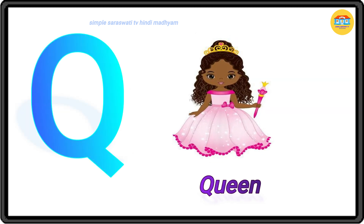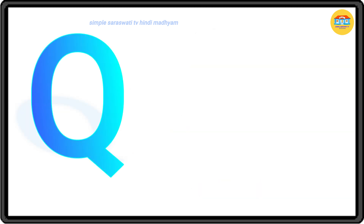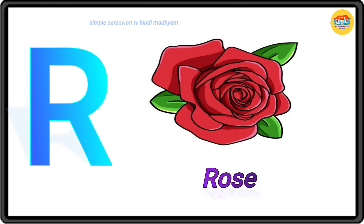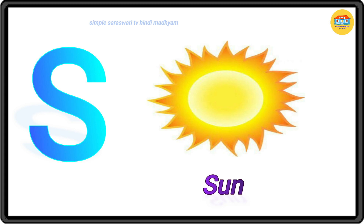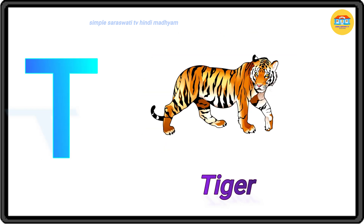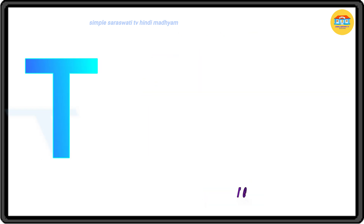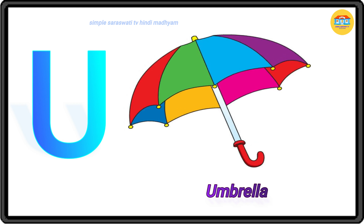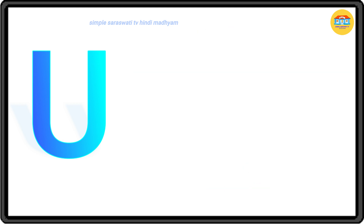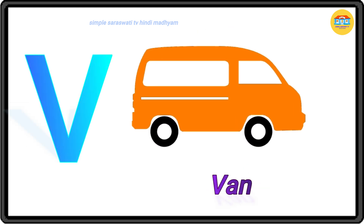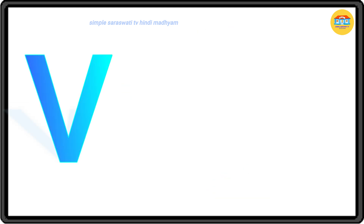Q for queen, R for rose, S for sun, T for tiger, U for umbrella.